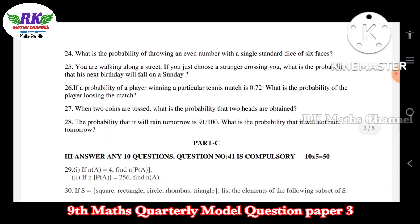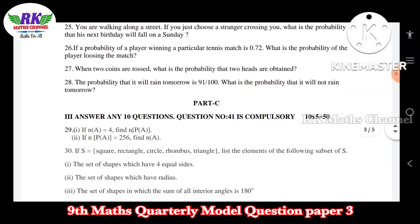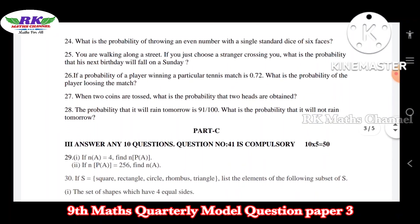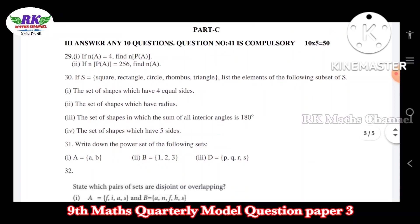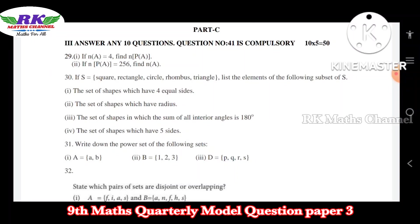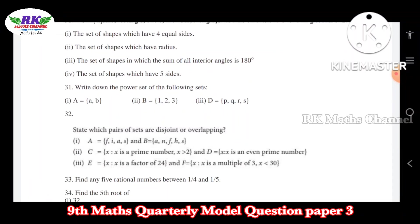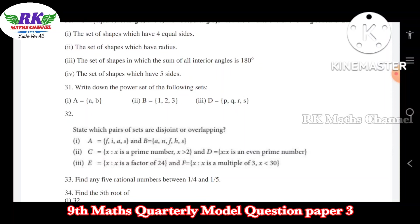What is the probability of throwing? Probability questions. In Part C there are 5 more questions. Question number 29: find N of A and N of P of A — the power set. The power set is nothing but all subsets. Subsets are the elements. You can see the size: 3 questions and the power set.